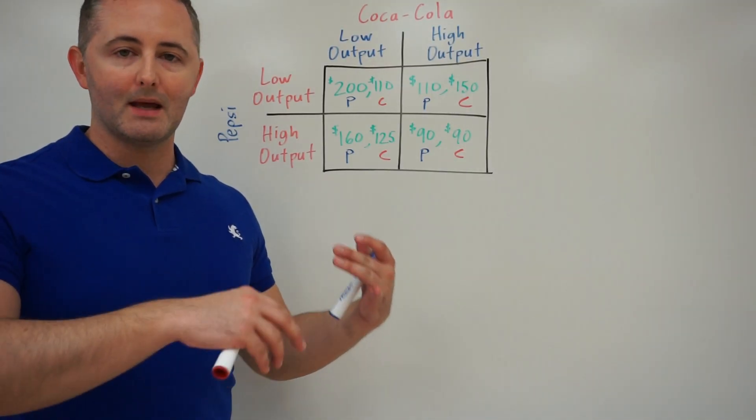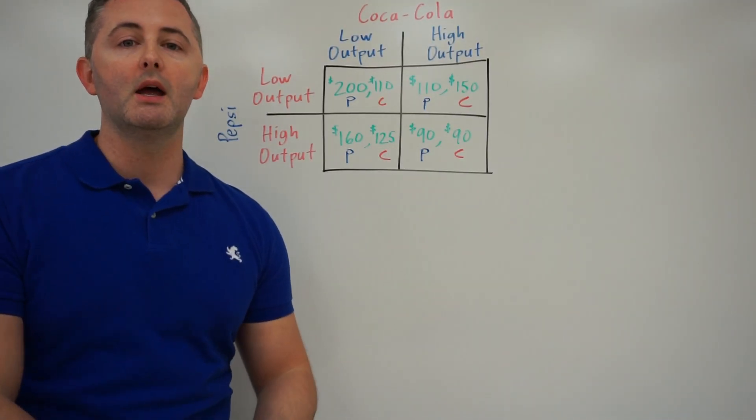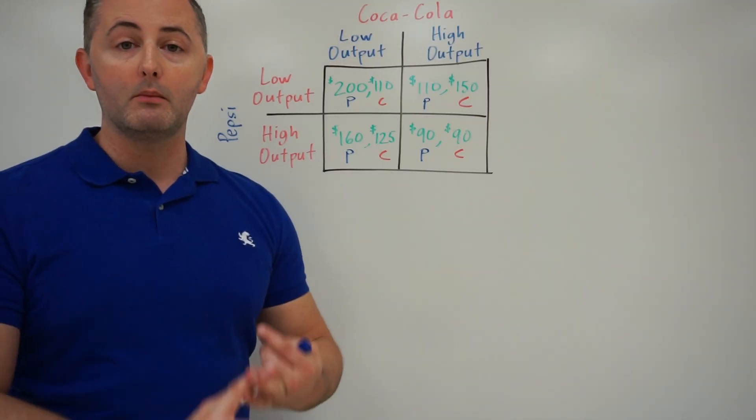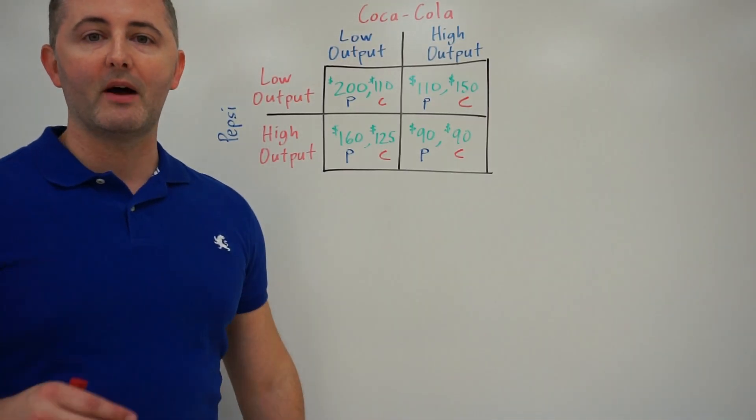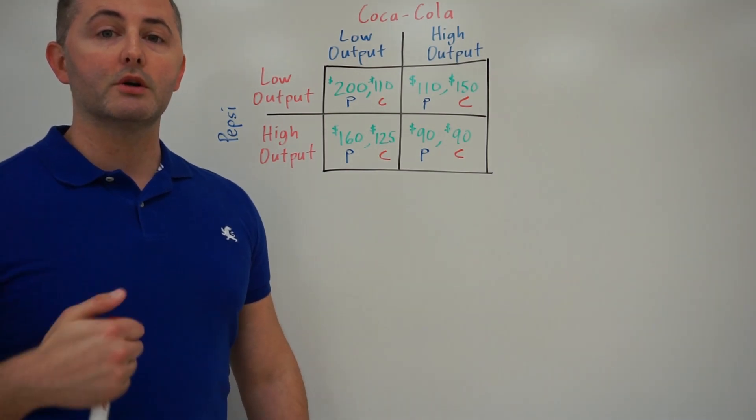So we're going to use this information to then make certain determinations of whether or not these firms have a dominant strategy, to find a Nash equilibrium if one exists, and also to determine whether or not these companies find themselves in what is known as a prisoner's dilemma.